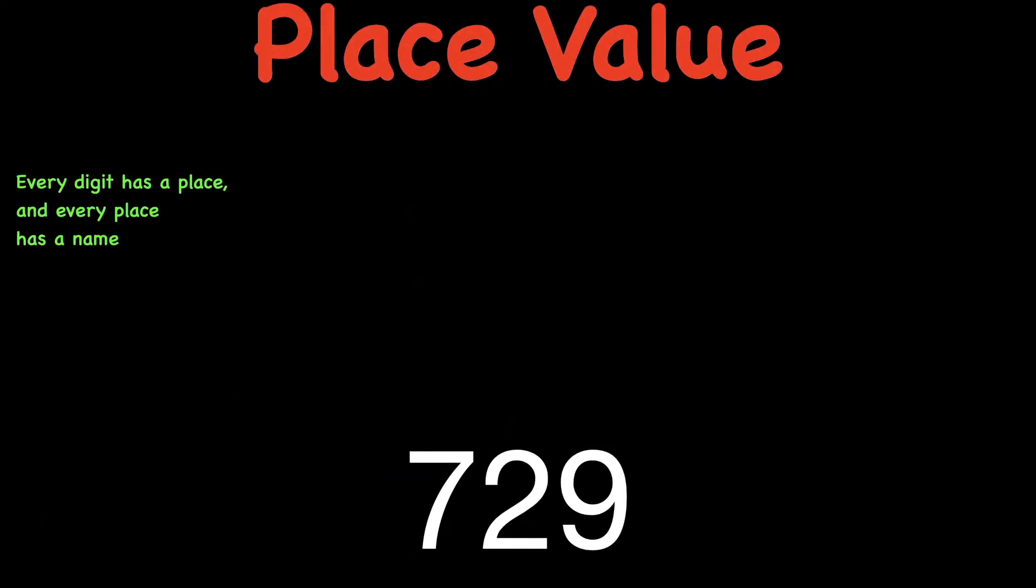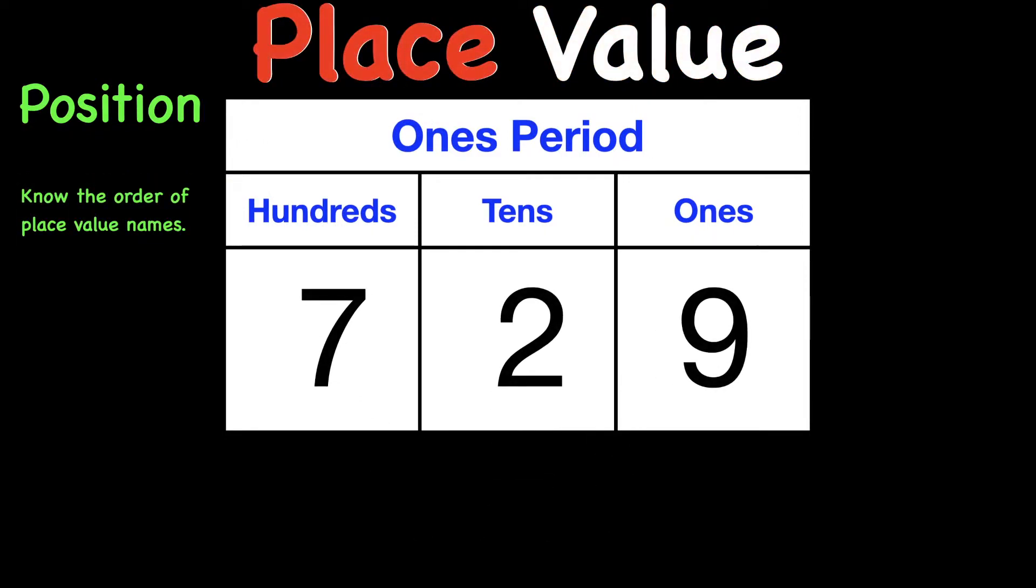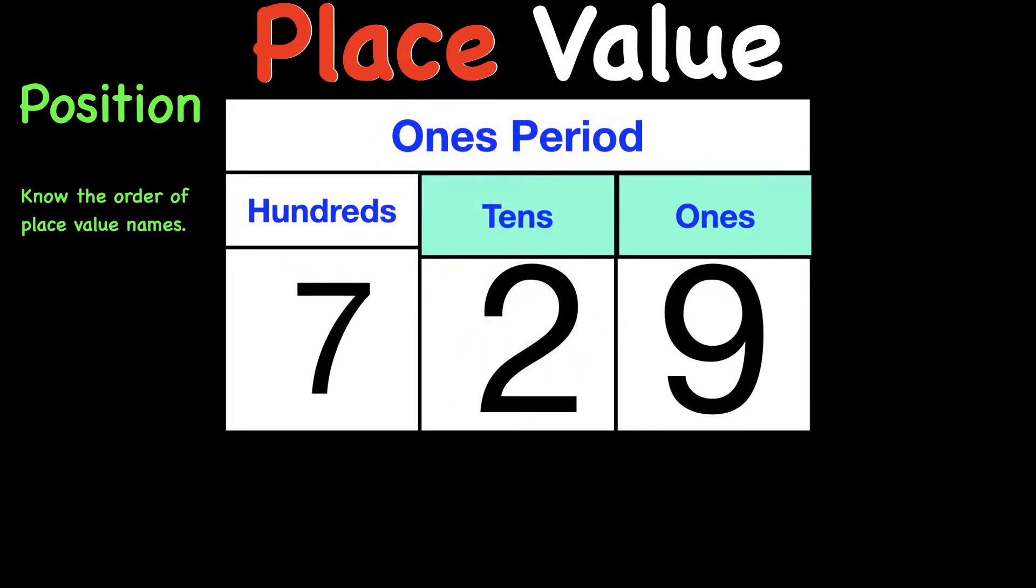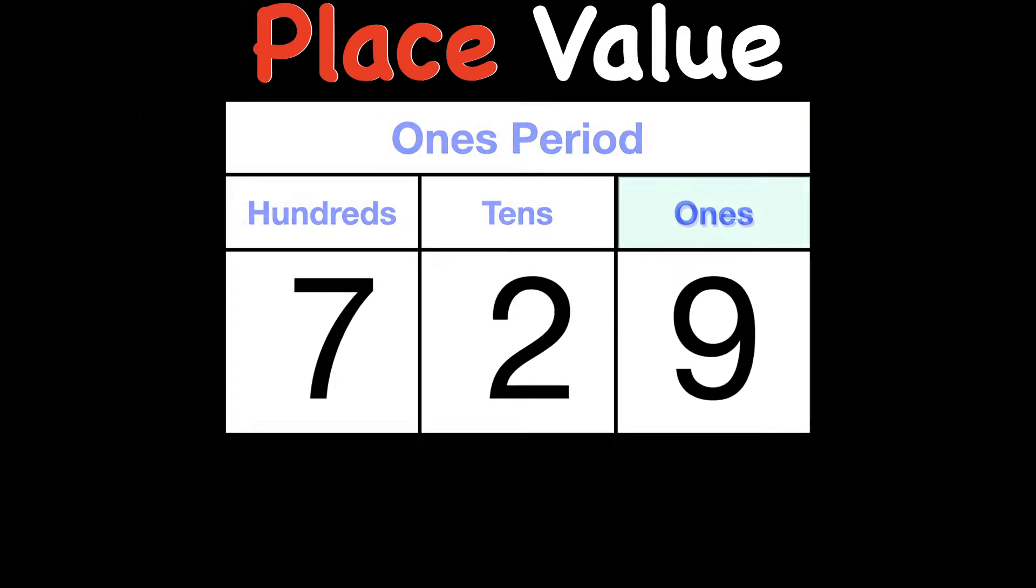So every digit has a place, and every place has a name, and we're talking about place value, and it's based upon the position. So let's put 729 on a place value chart. The nine is in the ones place value. The two is in the tens place value, and the seven is in the hundreds place value. Those three are called the ones period.